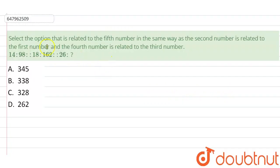Hello everyone, so today's question is: select the option that is related to the 5th number in the same way as the 2nd number is related to the 1st number and the 4th number is related to the 3rd number. जिस तरीके से ये 1st number, 2nd number से related है और यहाँ पर ये 3rd number, 4th number से related. मुझे बताना है 5th number से relation रखने वाला यहाँ पर question mark में क्या appear होगा.